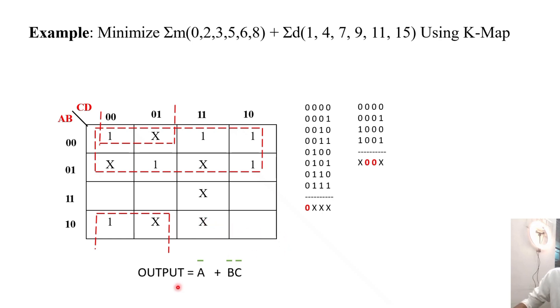Now we get the simplified expression as A' + B'C'. This A' comes from this group. Check the column here - this is 0. In this group, these 2s are 0, so it's A' because this is the A column, and this is B' and C'.